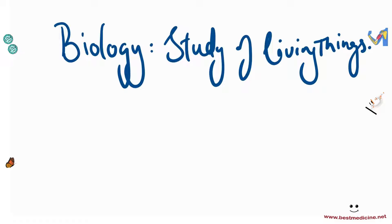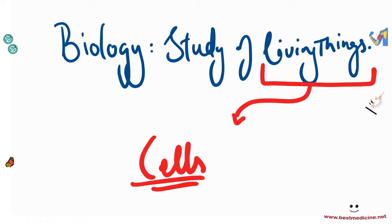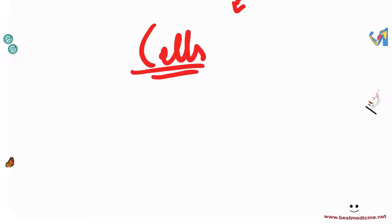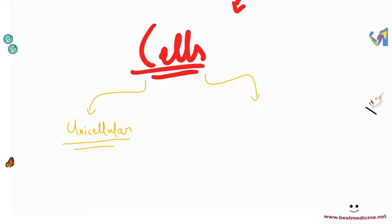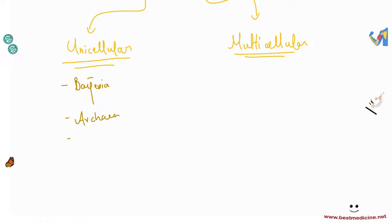Since we're studying everything about living things, it makes sense to start with something very small — what makes them up. All living things are made up of cells. Every organism is made of cells. Some organisms are made up of one cell and we call them unicellular organisms, while some are made up of multiple cells and we call them multicellular organisms. Unicellular organisms include prokaryotes — bacteria and archaea.